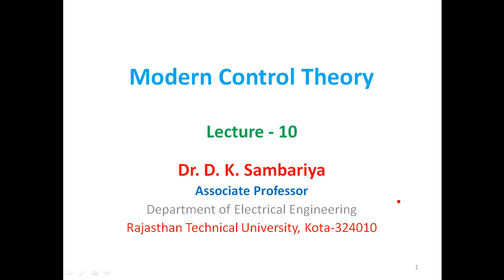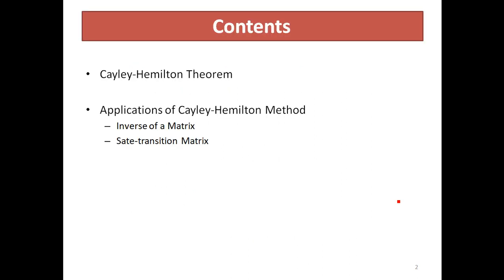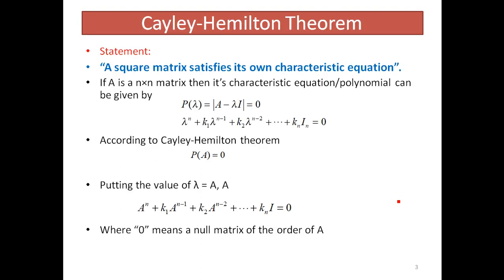Welcome to lecture number 10 from Modern Control Theory. In this lecture, we will be considering the application of the Cayley-Hamilton theorem for the calculation of the inverse of a matrix and the state transition matrix. According to the Cayley-Hamilton theorem, a square matrix satisfies its own characteristic equation.